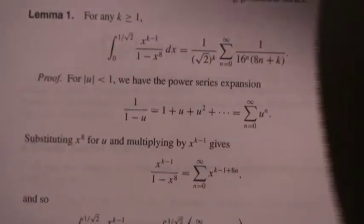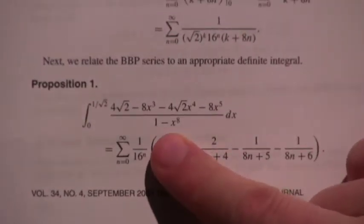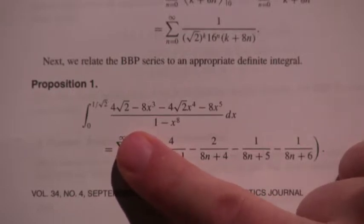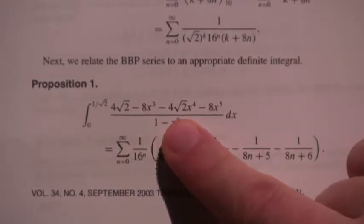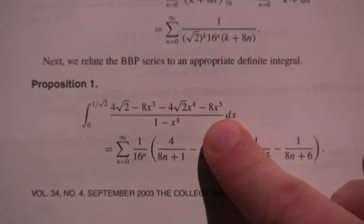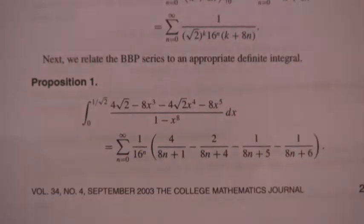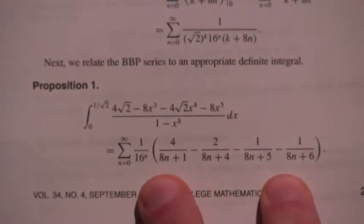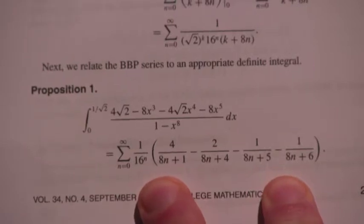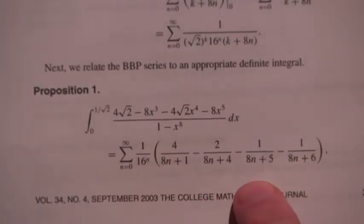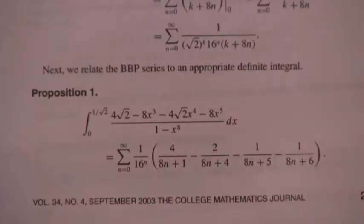And then she moves on to this fascinating integral here. 0 to 1 over root 2 of 4 root 2 minus 8x cubed minus 4 root 2 x to the 4th minus 8x to the 5th. The whole thing divided by 1 minus x to the 8th. X to the 5th. Sorry. And that equals this. That's what we're looking for. So that's the series that we were looking for, or we are looking for. And so all we have to do now to know what this series equals is to evaluate this integral. All right. How would you think about evaluating that integral?